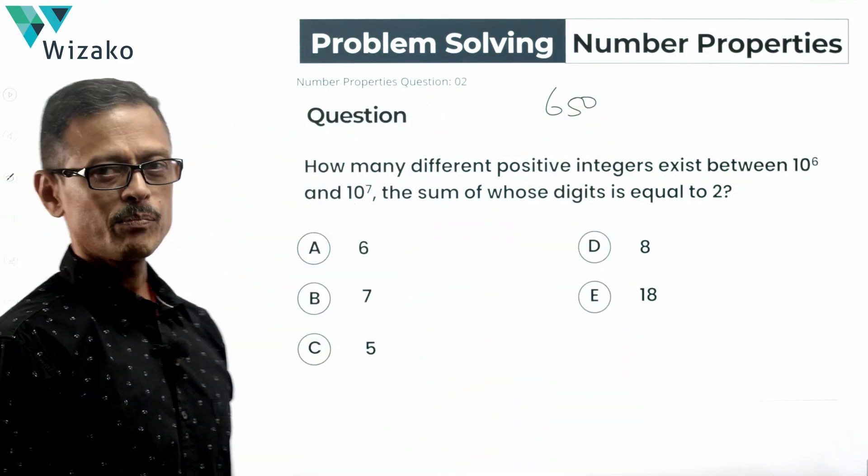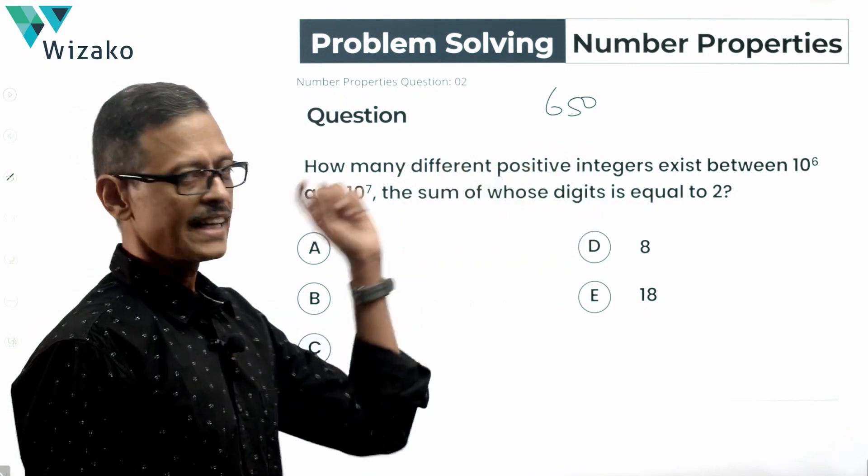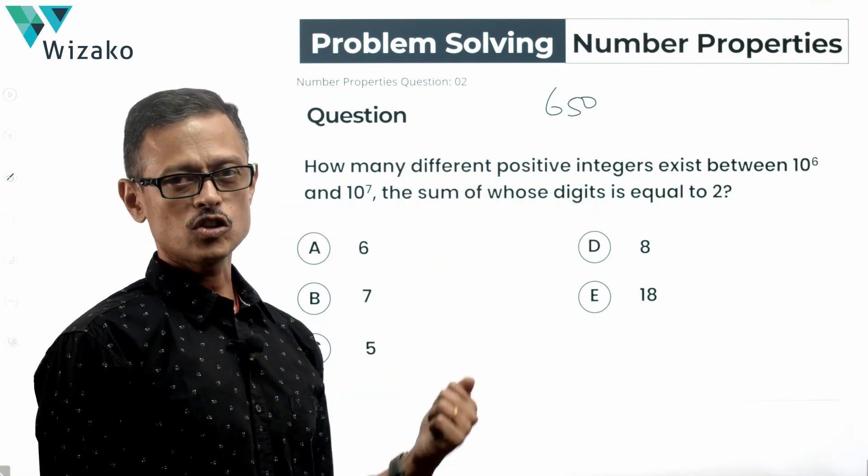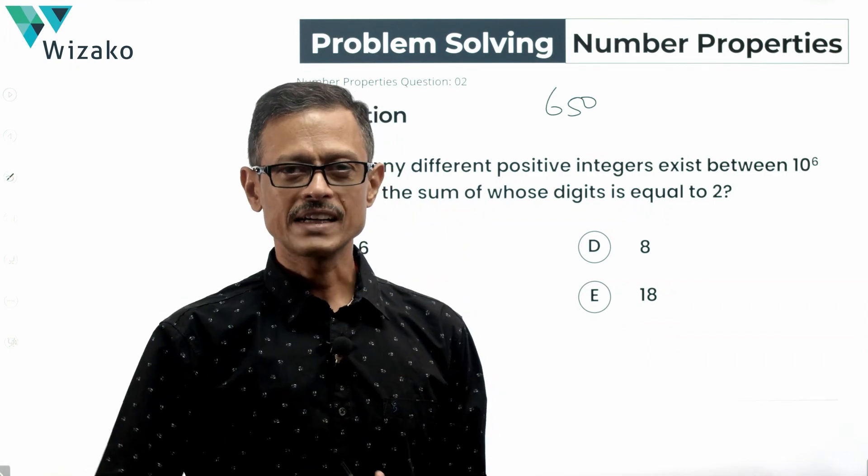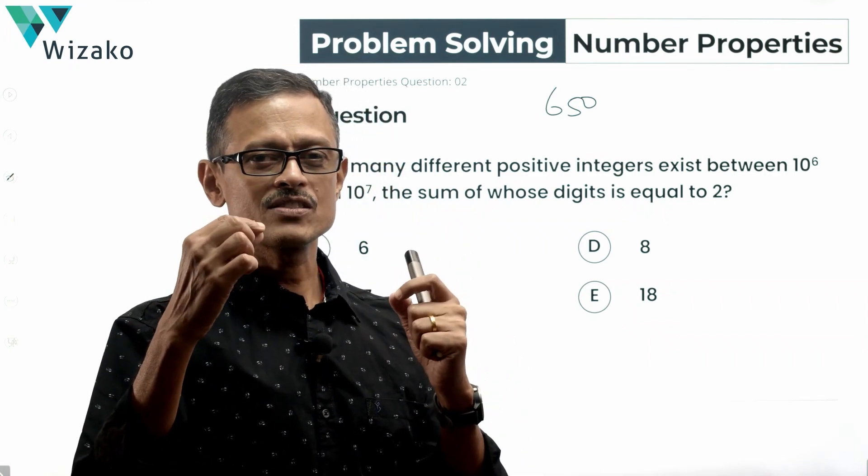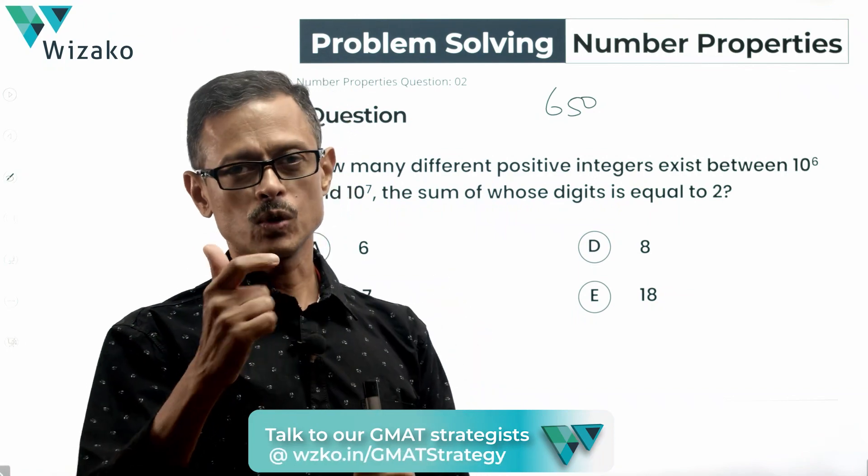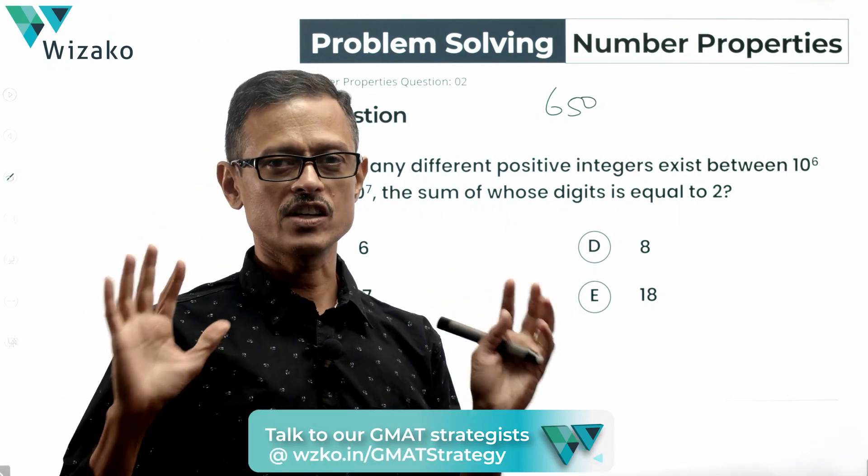How many different positive integers exist between 10 raised to the power of 6 and 10 raised to the power of 7, the sum of whose digits is equal to 2? As we solve this question, let's also place emphasis on certain things that we should not overlook, whether they matter for this question or not.